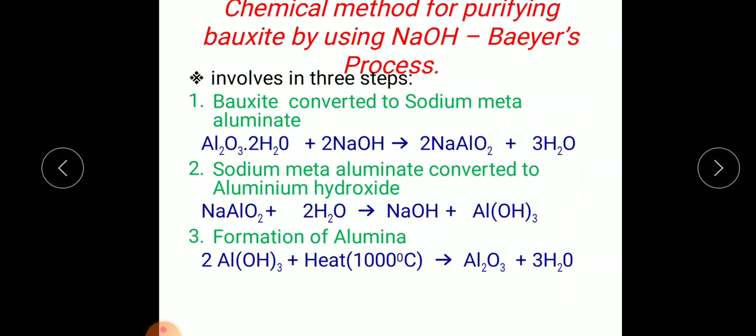Generally this Baeyer's Process involves three steps. The first step is bauxite converted to sodium metaaluminate. That means aluminium bauxite, aluminium oxide two molecules of water, when treated with sodium hydroxide solution, first it is going to form sodium metaaluminate and water.